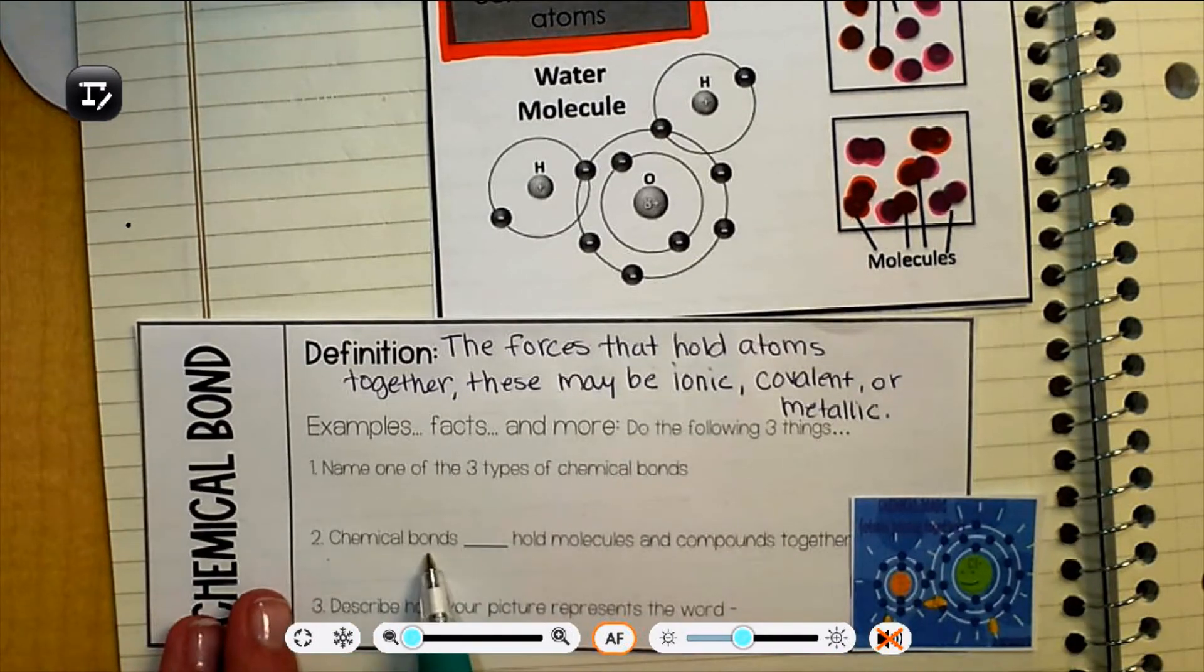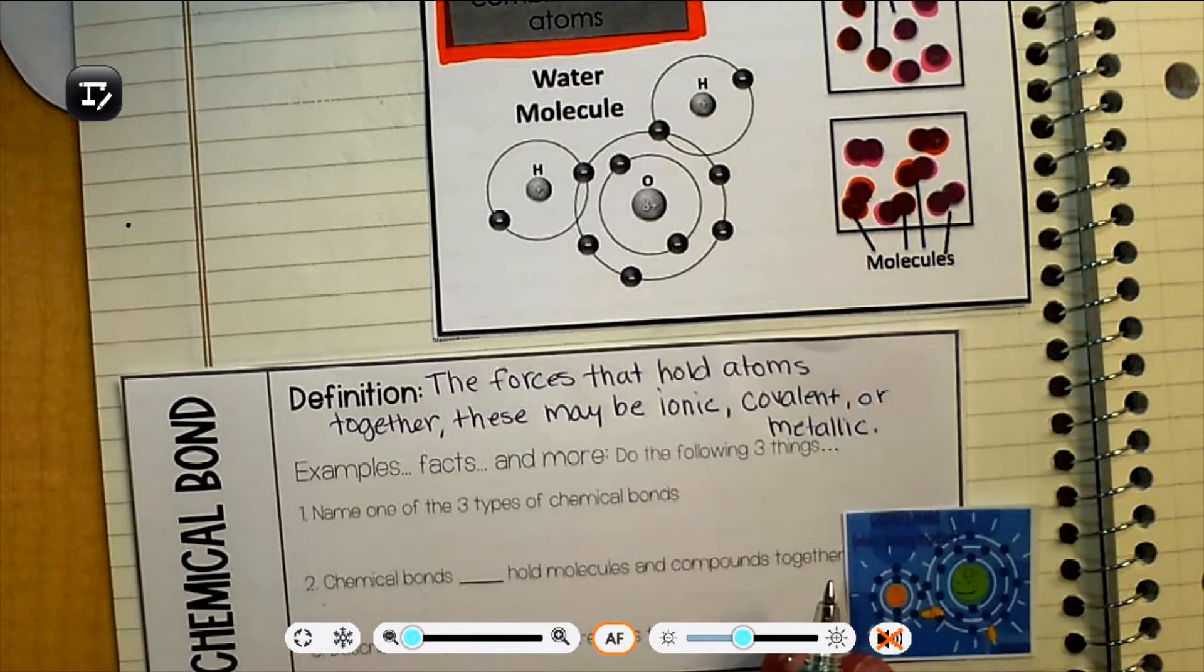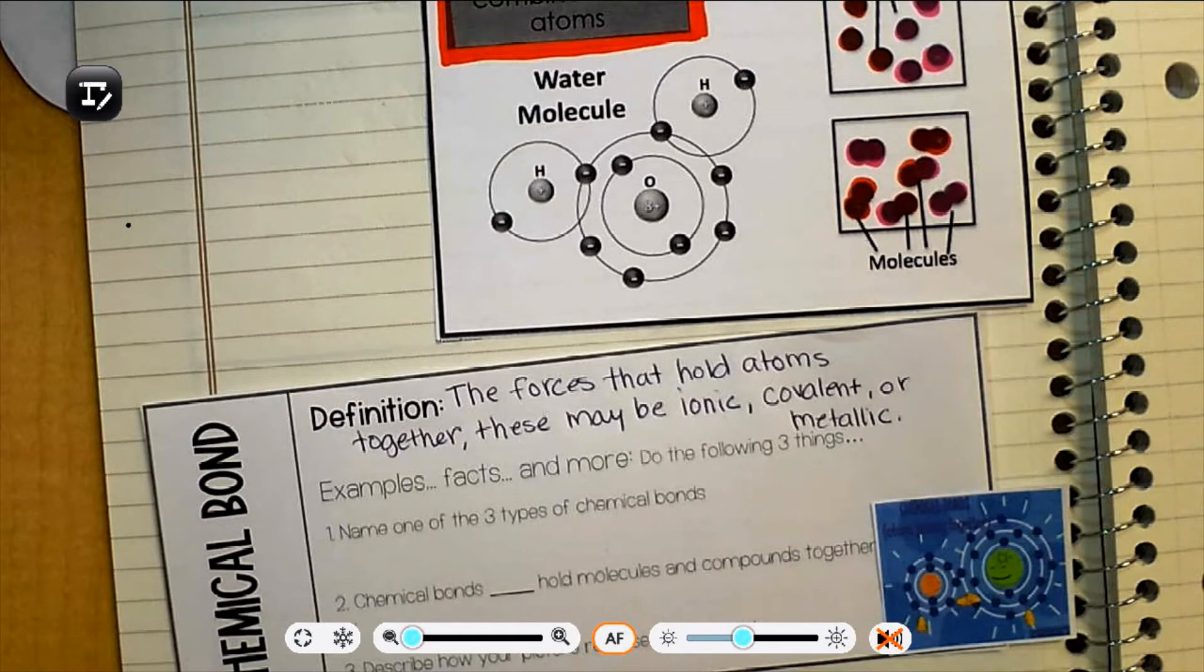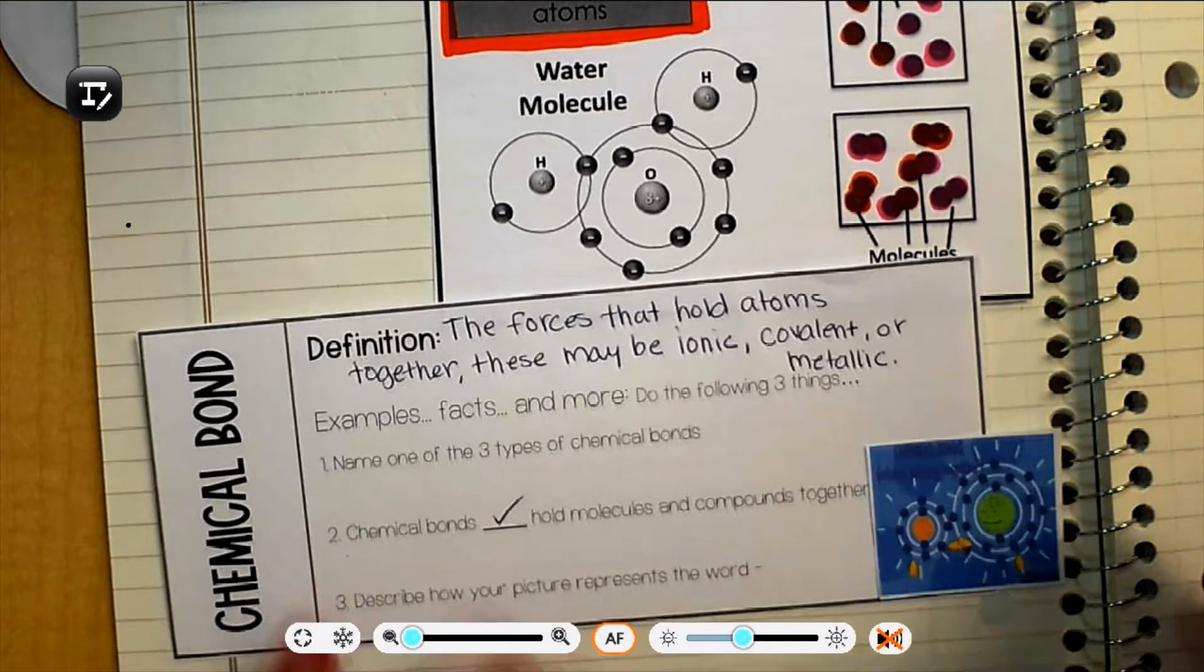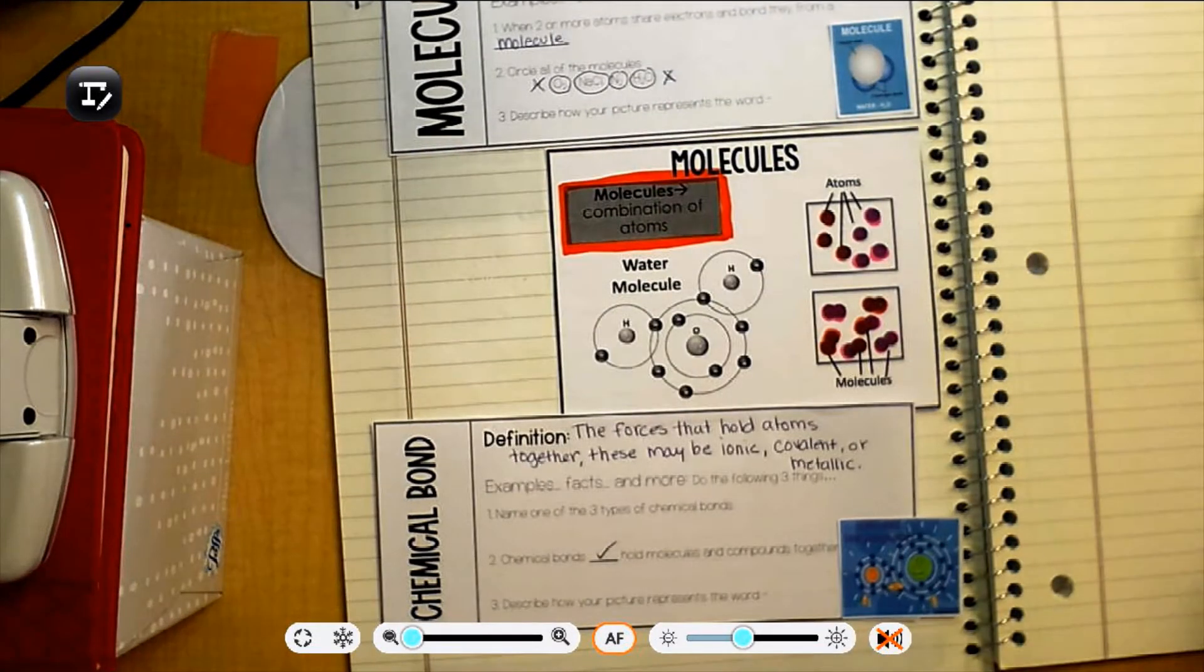Question two. So chemical bonds, blank, hold molecules and compounds together. What do we think Ms. Philpott is trying to write there? Hmm. Honestly, I have no idea. That's just a true statement. Chemical bonds hold molecules and compounds together. Okay. Just write. Check. Yep. They do that. And make sure that you describe in this one. And then again up here in molecule. Don't forget how my picture that I picked for you represents the word.